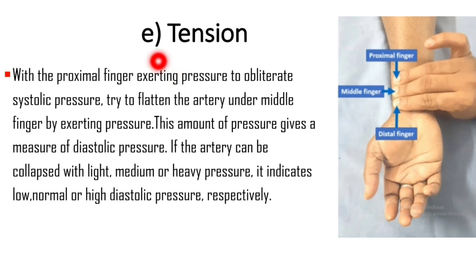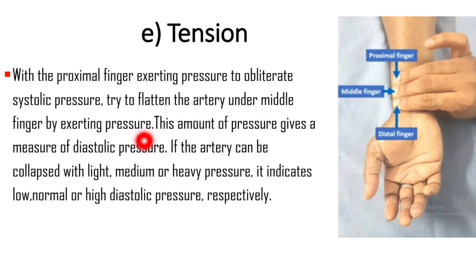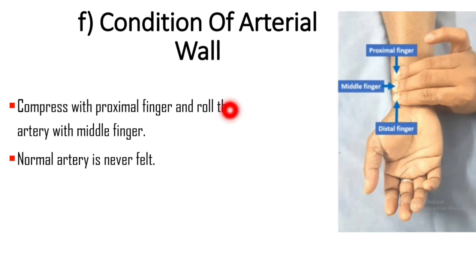The next character is tension. With the proximal finger exerting pressure to obliterate systolic pressure, try to flatten the artery under the middle finger by exerting pressure. This amount of pressure gives a measure of diastolic pressure. The artery can be collapsed with light, medium, or heavy pressure, indicating low, normal, or high diastolic pressure respectively. To assess the condition of the arterial wall, compress with the proximal finger and roll the artery with the middle finger. A normal artery is not felt.